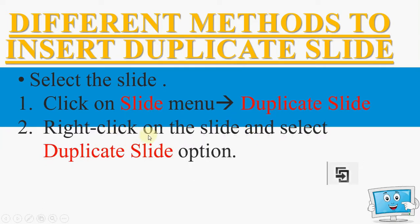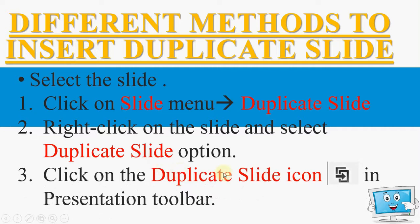The second method is to right click and select the duplicate slide option — that is in the normal view on the left side, which is the thumbnail slide, we have to right click on the left side and choose duplicate slide. The third method is to click on the duplicate slide icon in the presentation toolbar.